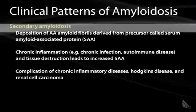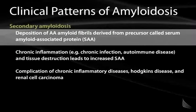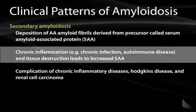Secondary amyloidosis involves deposition of amyloid fibrils derived from precursor proteins such as serum amyloid-associated protein, or SAA. Secondary amyloidosis is seen in clinical conditions characterized by chronic inflammation — think of patients with chronic infections or some sort of autoimmune disease, particularly those in which tissue destruction leads to increased amounts of SAA protein.